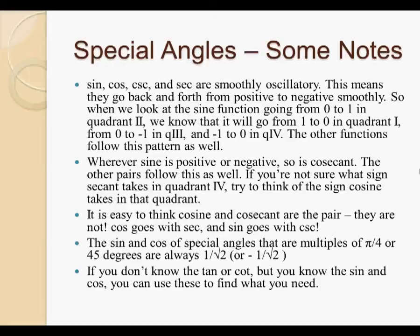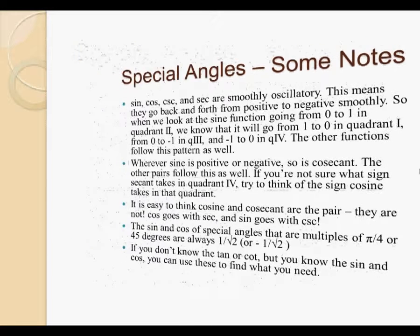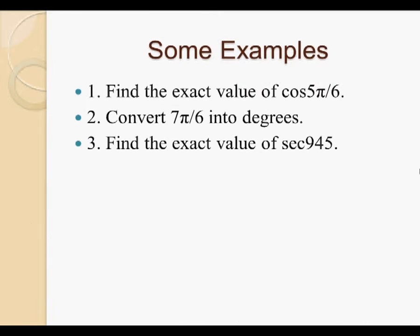Also note, if you don't know the tangent or cotangent, but you know the sine and cosine, you can use these to find the value you need, since tangent is simply sine divided by cosine, and cotangent is cosine over sine. Here's some examples. So here are three questions, which we will be going through on the next slides.